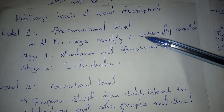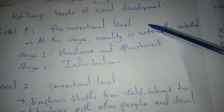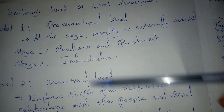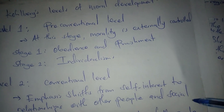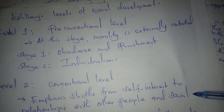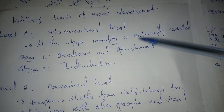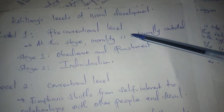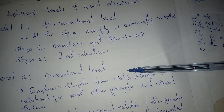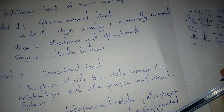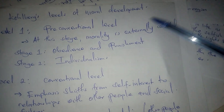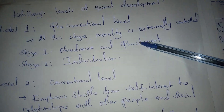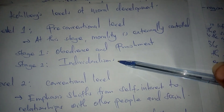Let's look at Kohlberg's levels of moral development. We say it's the stages that make up the levels. The levels are three: level one is the pre-conventional level, level two is the conventional level, and level three is the post-conventional level.